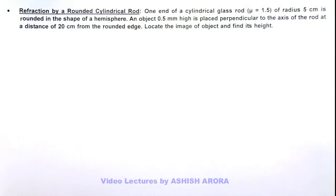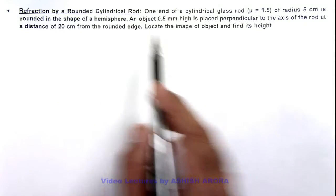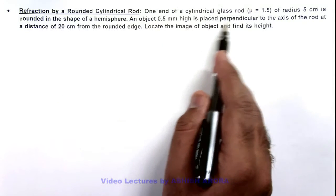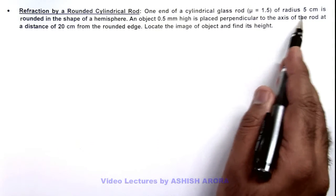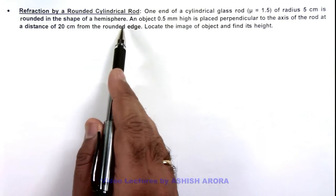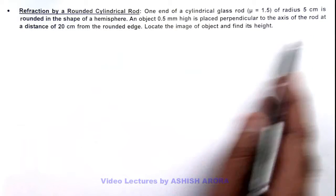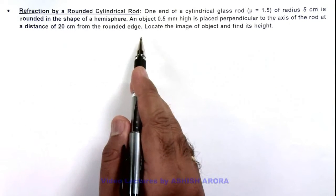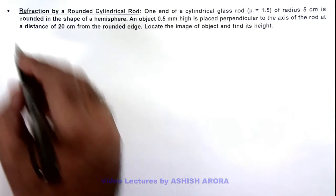In this illustration we'll analyze the refraction by rounded cylindrical rod. Here we are given that one end of a cylindrical glass rod with refractive index 1.5 of radius 5 centimeters is rounded in the shape of a hemisphere. An object point 5 mm height is placed perpendicular to the axis of rod at a distance 20 centimeters from the rounded edge. We are required to find the image of object and its height.